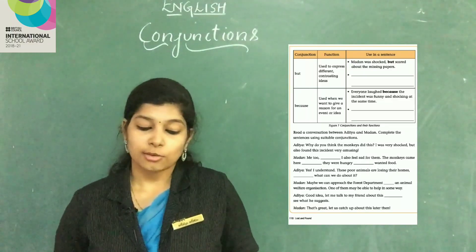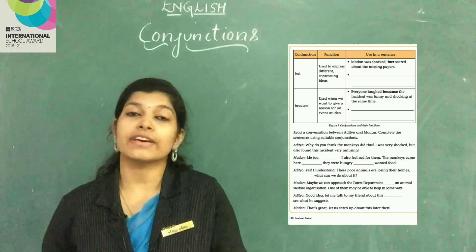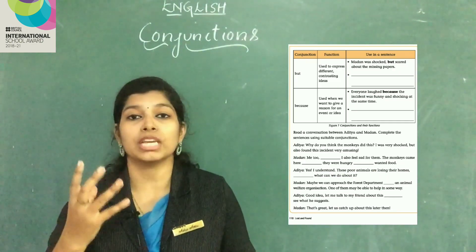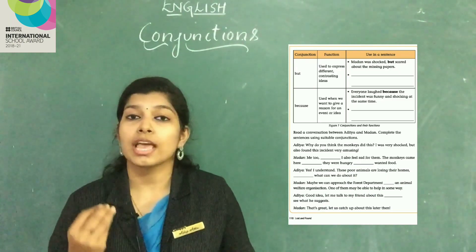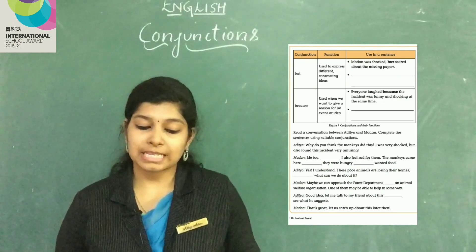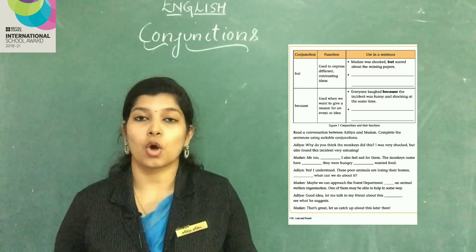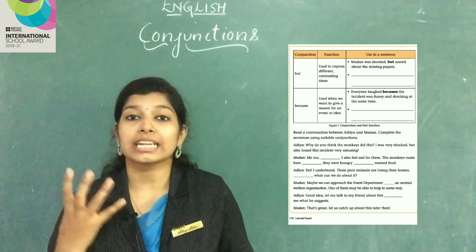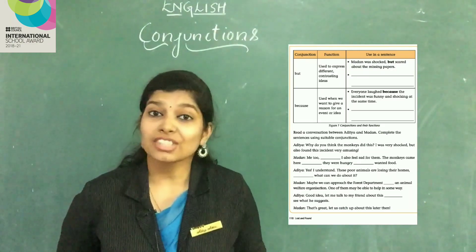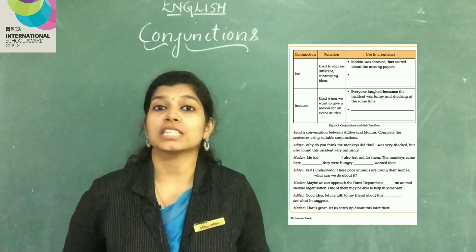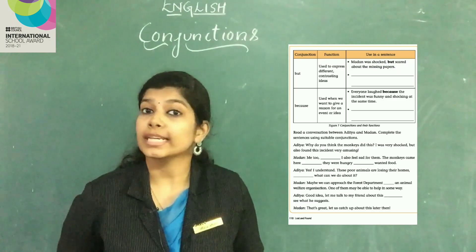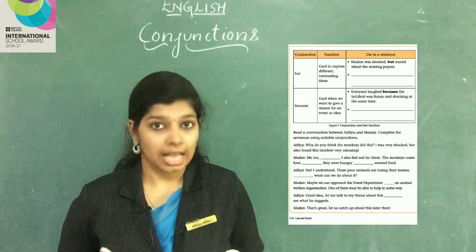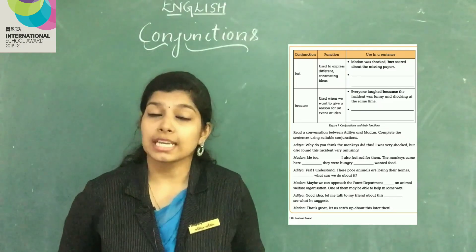Now, 'because' — used when we want to give a reason for an event or idea. Whenever we have to state a reason for something, we use the conjunction 'because'. For example: Gopal should accept his mistake because it is wrong to steal. Rajesh is crying because Karanam Gopal sir scolded him.